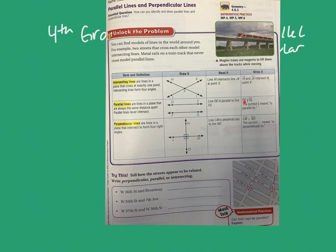To write it, I could simply write line DE, then this little symbol which means parallel, then line FG. It's much shorter, but I would still read it the same way: line DE is parallel to line FG. This symbol means 'is parallel to.'